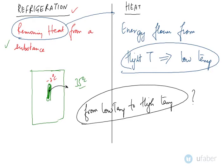This is an unnatural flow of heat energy, and this happens if we provide some work input. We will look at that in subsequent slides. So heat naturally flows from high temperature to low temperature, but in refrigeration we are making heat flow from low temperature to a high temperature surrounding by providing some work input.